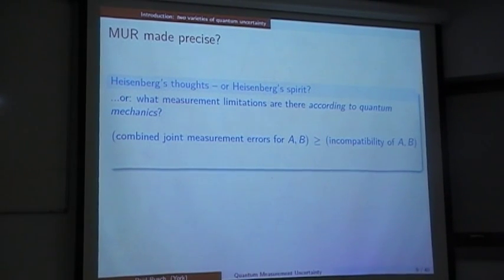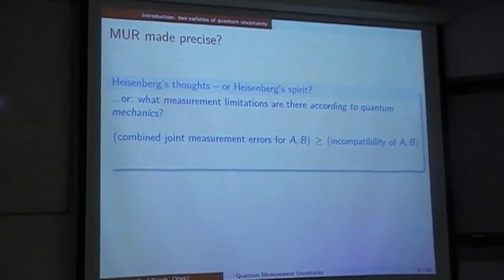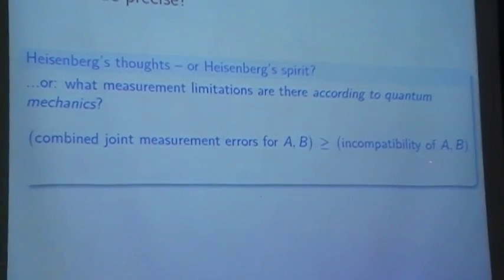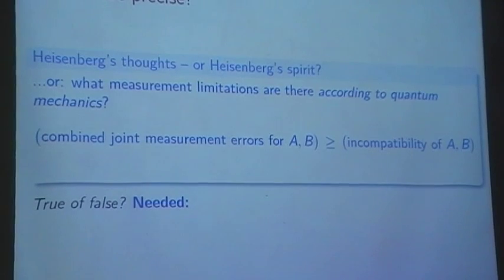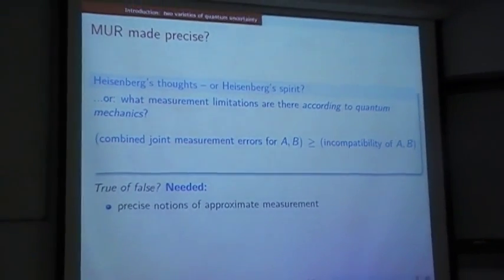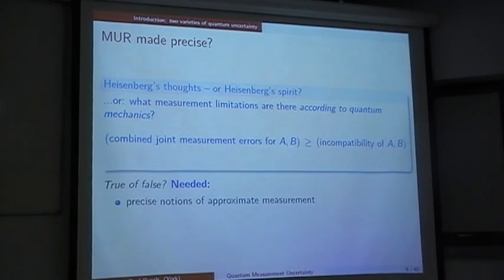So I propose, and that refers to the title of my talk, not to bear with trying to read Heisenberg's thoughts posthumously, but maybe evoke his spirit, or really say, better to say, try to find out what measurement limits there are according to quantum mechanics, if any. And Heisenberg's spirit would be captured, I would say, if you end up formulating and proving a relation of the form here, that the combined joint measurement errors, two observables, incompatible observables, the errors have to be bounded by the incompatibility of A and B. So that's what I'm going to spell out for qubits here, mostly. So in order to decide whether such statements can be proven, we certainly need a precise notion of approximate measurement, approximate joint measurement, and measures of approximation error, measures of disturbance, if you like.